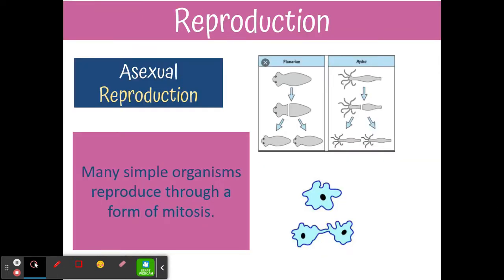Cells also divide for reproduction purposes. Asexual reproduction is when one cell divides into two and you have those identical clones. Mitosis is used for asexual reproduction.